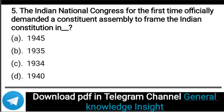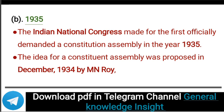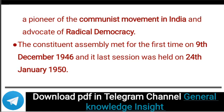Next question: The Indian National Congress for the first time officially demanded a Constituent Assembly to frame the Indian Constitution in which year? The correct answer is option B, in the year 1935. The Indian National Congress made its first official demand for a Constituent Assembly in 1935. The idea for the Constituent Assembly was proposed in December 1934 by M.N. Roy, who was a pioneer of the communist movement in India and an advocate of radical democracy. The Constituent Assembly met for the first time on 9 December 1946 and its last session was held on 24th January 1950.